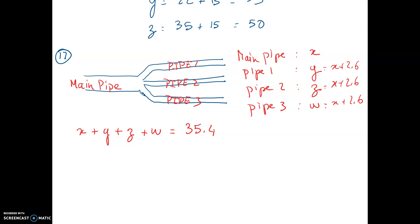Well, in that case, it's going to be very simple because I'm just going to substitute Y, Z and W by X plus 2.6 every single time. X plus 2.6 plus X plus 2.6 equals 35.4. I end up with 1, 2, 3, 4X plus 7.8 equals 35.4.